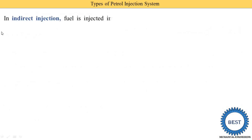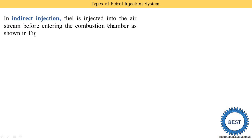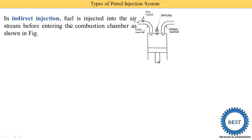In indirect injection, fuel is injected into the air stream before entering the combustion chamber as shown in the figure. Here you can see the fuel injector is installed in the intake manifold system. This is the piston, the cylinder, the spark plug, and the exhaust manifold. The petrol is injected into the intake manifold, not directly into the combustion chamber.